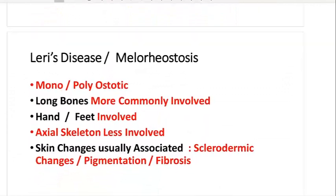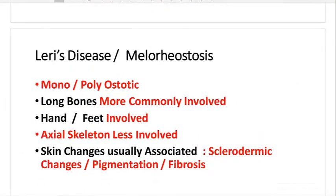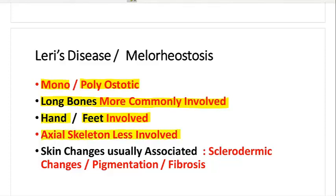Some salient features about melorheostosis or Larry's disease: it can be monostotic or polyostotic — single or multiple bone involvement. In clinical practice, monostatic cases are more common. Long bones are more commonly involved — another classical difference from DISH, which was mainly in the axial skeleton. In melorheostosis, long bones are predominantly involved, and even when short bones are affected, they are usually the hands and feet, with classical sparing of the axial skeleton.